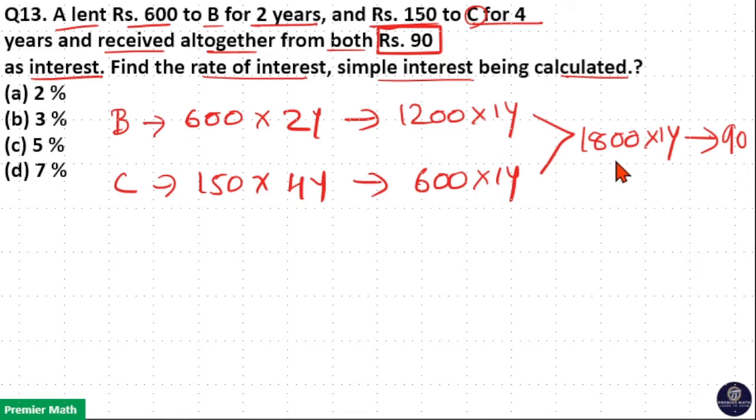That is interest is 90, principal is 1800, number of years is 1. Now 90 is how much percentage of 1800? 100 percentage of 1800 is 1800. 10 percentage of 1800 is 180. That means 5 percentage of 1800 is 90.